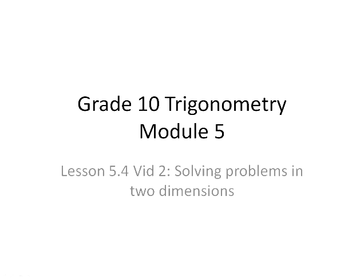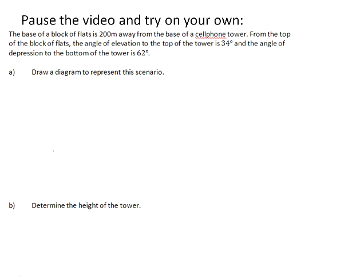Let's take a look at an example where we use trigonometry to solve a two-dimensional problem. The base of a block of flats is 200 meters away from the base of a cell phone tower. From the top of the block of flats, the angle of elevation to the top of the tower is 34 degrees, and the angle of depression to the bottom of the tower is 62 degrees.